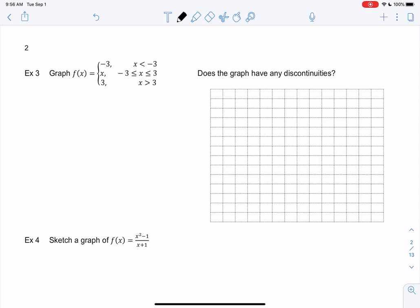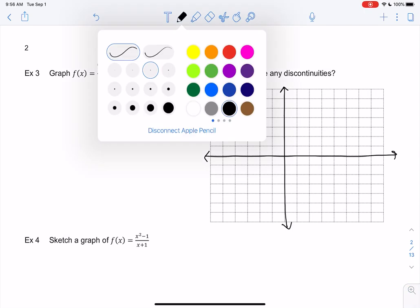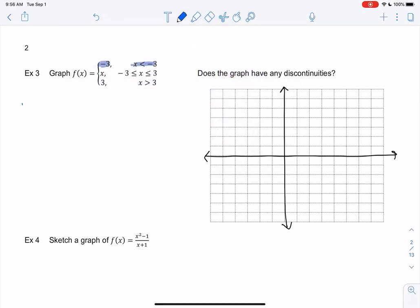Welcome back to piecewise functions. Let's graph a couple more. This one has three pieces, so I'm going to graph all three and then erase the pieces I don't want. The first piece tells us that the graph is equal to negative 3 when x is less than negative 3. So negative 3 just makes one of those horizontal lines again. At negative 3 we get a horizontal line.